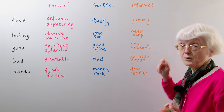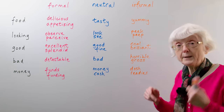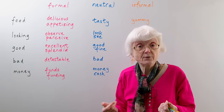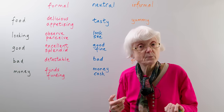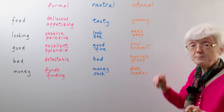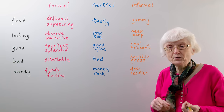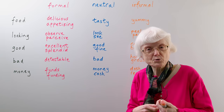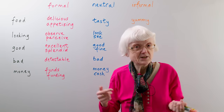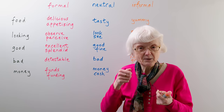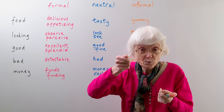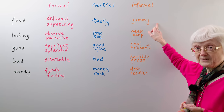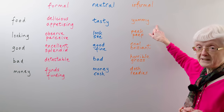In a much more informal setting, or when you're with children, the words you use may be different. To describe food as yummy — I think it's more the kind of word you would use with a child, especially if you're trying to persuade a child to eat something. You might have something on a spoon and say, 'oh, come on, it's really yummy!' So you would use that more with a child in a very informal way.